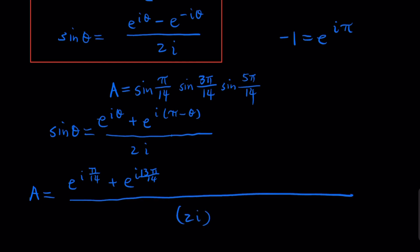And then what we can do is plug in the 3π here. It's going to be e^(i3π/14) and that's going to be 11π/14. And this is going to be e^(i5π/14) and this is going to be 9π/14.